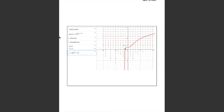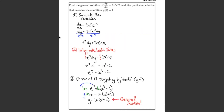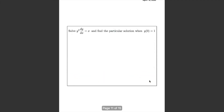To recap: there are basically four steps every time. Step one: separate the variables. Step two: integrate both sides. Step three: get y by itself. Step four: if a particular solution is requested, plug in the point and solve for c to get the particular solution.